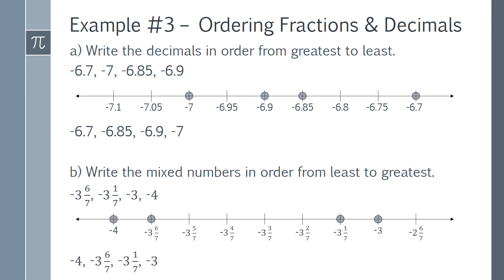So, we have negative 4, negative 3 and 6 sevenths, negative 3 and 1 seventh, and negative 3.